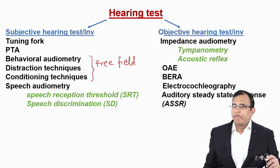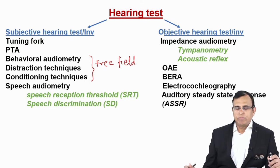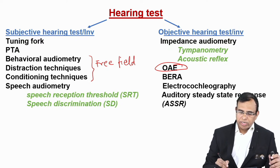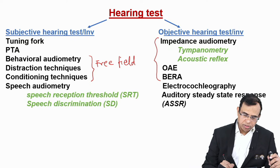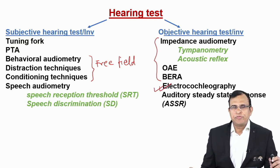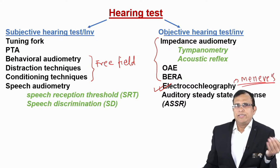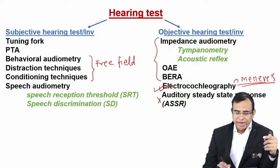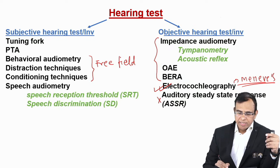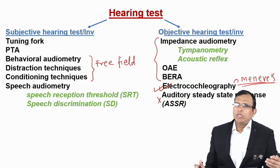Objective tests include: impedance audiometry (with which you can do tympanometry and acoustic reflex), otoacoustic emissions (OAE), BERA (brainstem evoked response audiometry), electrocochleography, and auditory steady-state response (ASSR). Electrocochleography is used mainly to diagnose Meniere's disease and not for other tests. ASSR is not commonly done in India because BERA and OAE are much better. You should know ASSR is an objective type of hearing investigation, but you don't need to know its details.